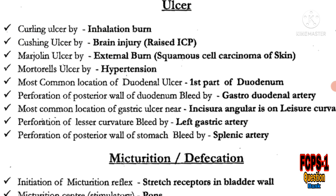Martorell ulcer is caused by hypertension. The most common location of duodenal ulcer is the first part of the duodenum, and perforation of the posterior wall of the duodenum causes bleeding from the gastroduodenal artery. The most common location of gastric ulcer is near the incisura angularis on the lesser curvature.